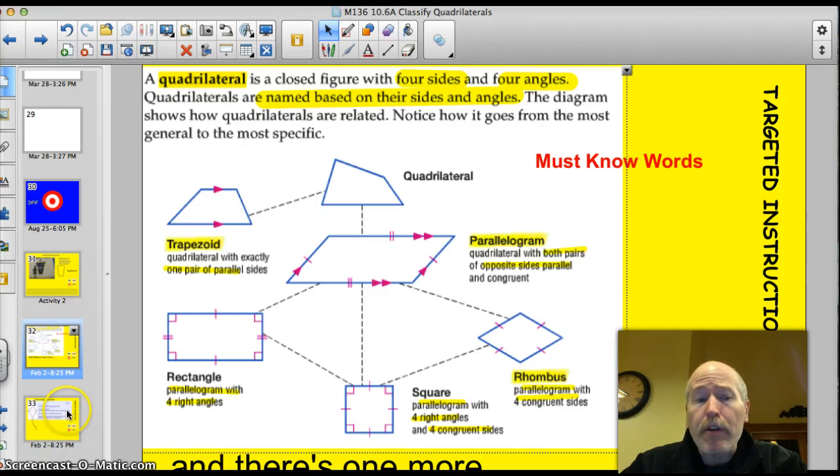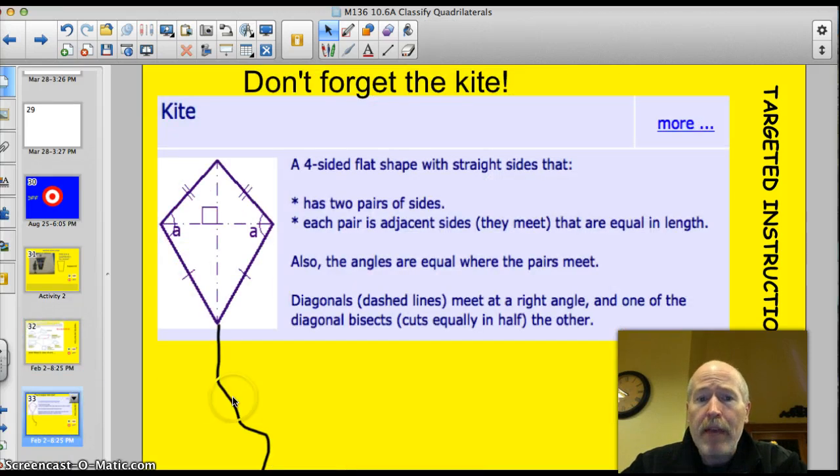There is one other figure that we're going to add to the picture, and you may have had it if you had an awesome 5th grade teacher like I was. We have a kite. A kite is a four-sided shape, a flat shape, a quadrilateral. It has two pairs of sides, and each pair of sides, the adjacent sides, are the same length. They're congruent. Look, so it has congruent sides, but they're adjacent, which means next to each other.